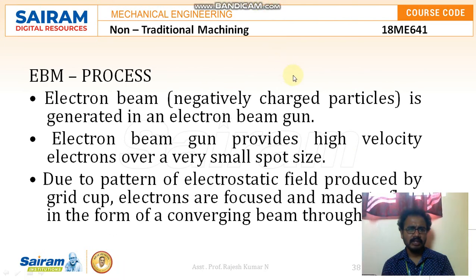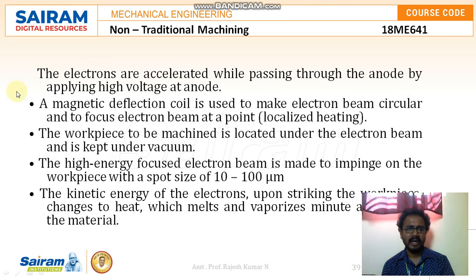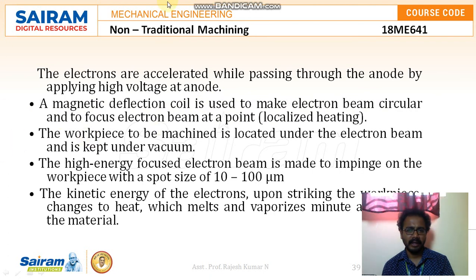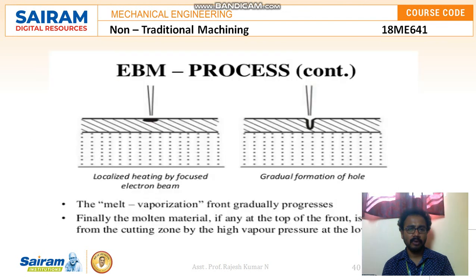In the electron beam machining process, negatively charged particles are generated in an electron beam gun, which provides high-velocity electrons over a small spot size. Due to the pattern of the electrostatic field produced by the grid cup, electrons are focused into a converging beam through the anode. The electrons are accelerated by applying high voltage at the anode, and a magnetic deflection coil is used to make the electron beam circular and focused at a point. The workpiece is kept under vacuum, and the high-energy focused electron beam is made to impinge on the workpiece at a spot size of 10 to 100 micrometers. The kinetic energy of the electrons upon striking the workpiece converts to heat, which melts and vaporizes a minute amount of material.